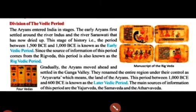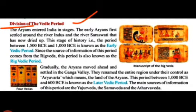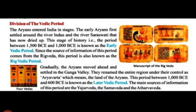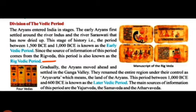During the Vedic period, the Aryans entered India in stages. They first settled around the River Indus and the River Saraswati, which has now dried up. This stage of history, the period between 1500 BC and 1000 BC, is known as the Early Vedic Period. The main source of information for this period comes from the Rig Veda, which is why it is also known as the Rig Veda period.